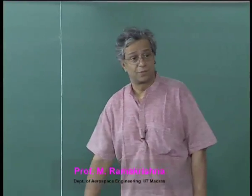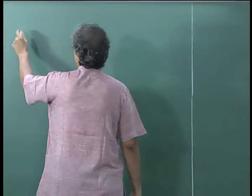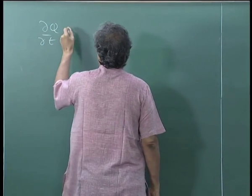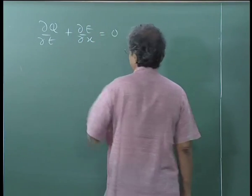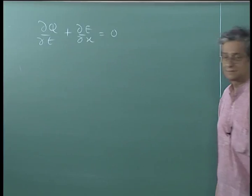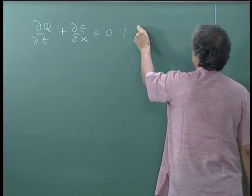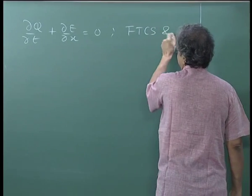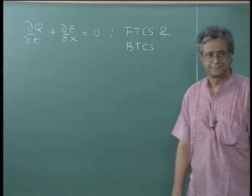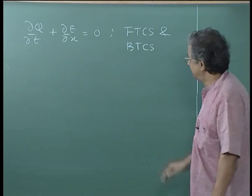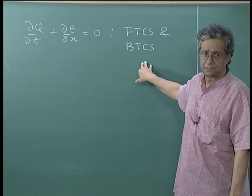We have been looking at 1D Euler equations: ∂q/∂t + ∂E/∂x = 0. We have seen FTCS and BTCS applied to this — forward time central space and backward time central space applied to this equation. We have seen BTCS applied in delta form — backward time central space applied in delta form.